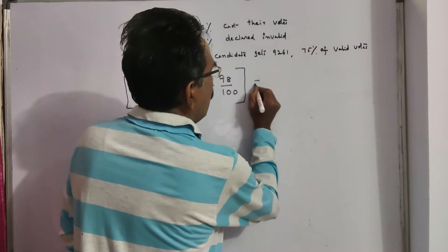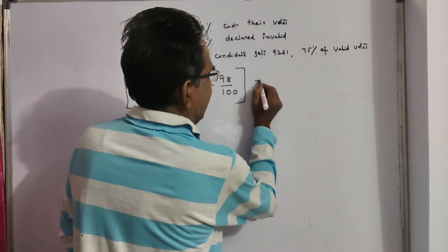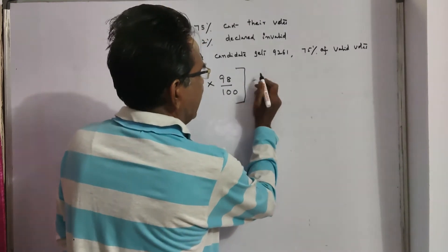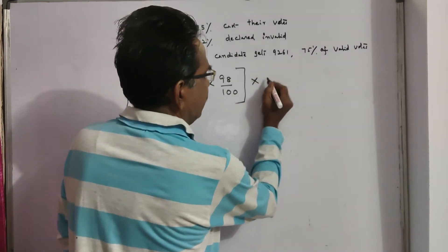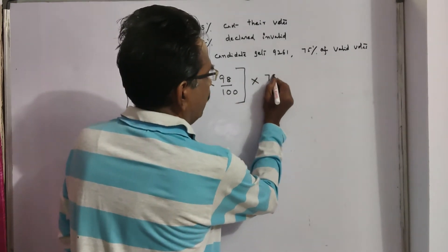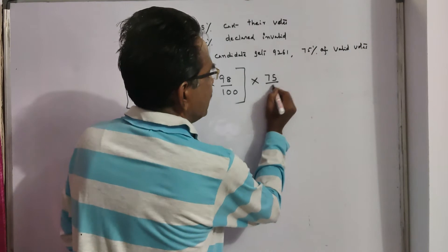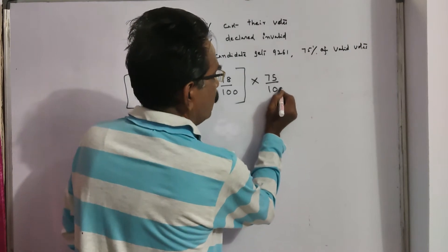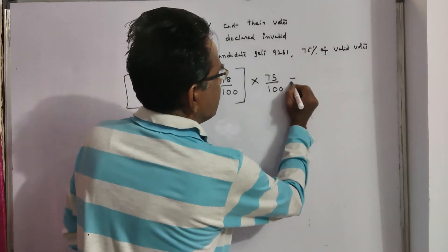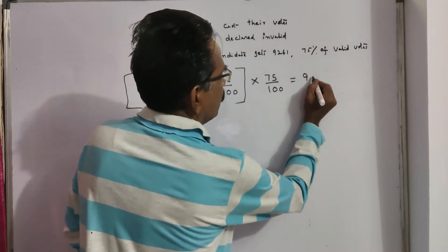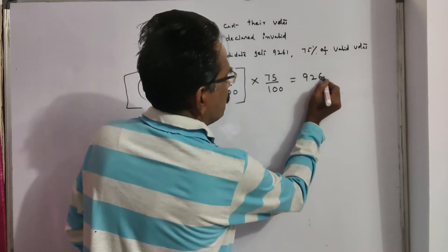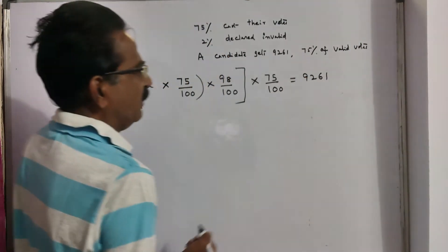Now, our candidate gets 75% of these valid votes, which is equal to 9,261.